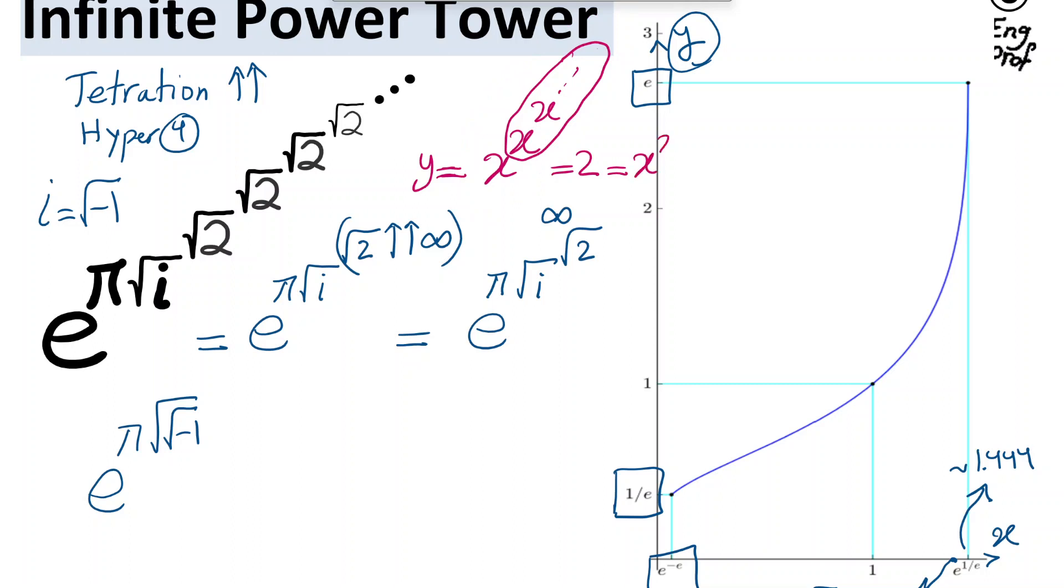So x to the power of 2 is equal to 2. Therefore, x should be square root of 2. We cannot accept a negative value. It has to be a positive value. Therefore, the answer to this infinite power tower is just 2. We just showed it, because when x is equal to square root of 2, then the infinite power tower of square root of 2 will end up to be equal to 2.